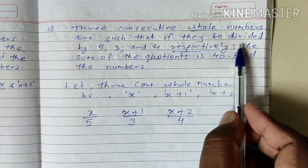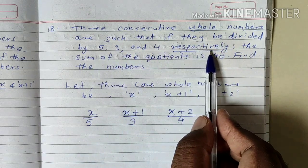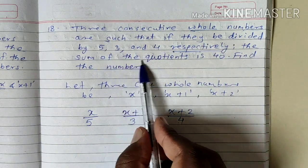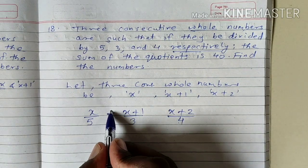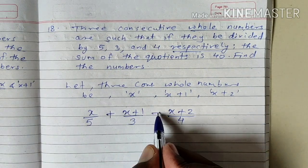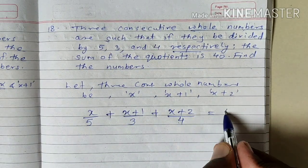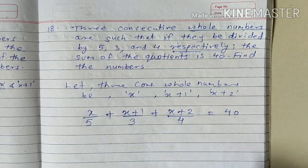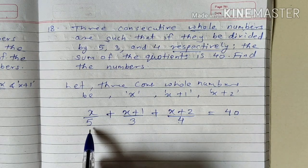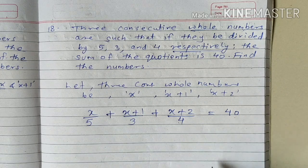Such that when they are divided respectively, the sum of the quotients is 40. Sum of the quotients is 40 — sum means addition equals 40.